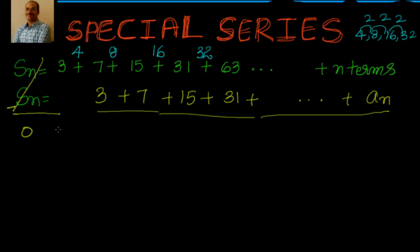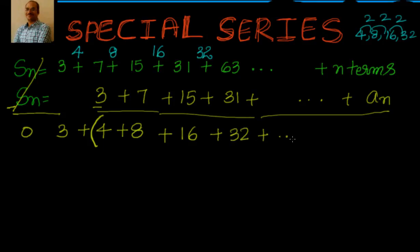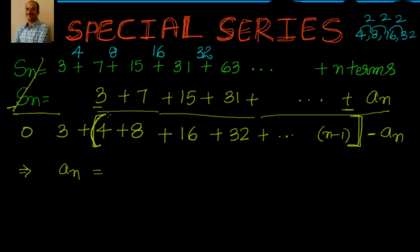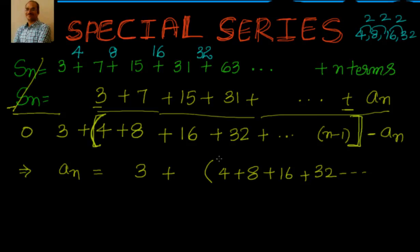The terms are not in any standard arithmetic or geometric progression, but the differences are in geometric progression. So what we do is take S(n), then write the same S(n) shifted by one position, and subtract. This gives us: 0 = 3 + (4 + 8 + 16 + 32 + ...) − aₙ.